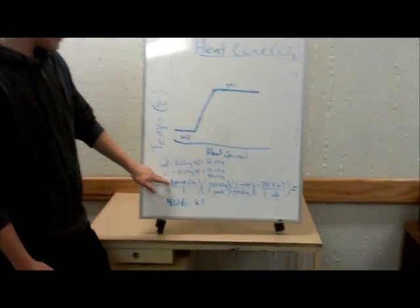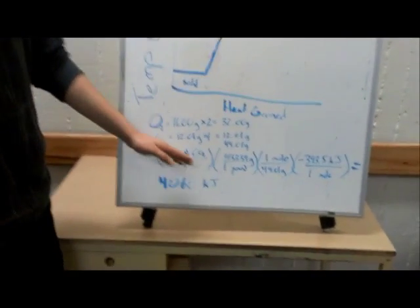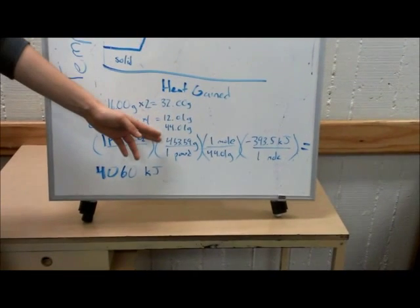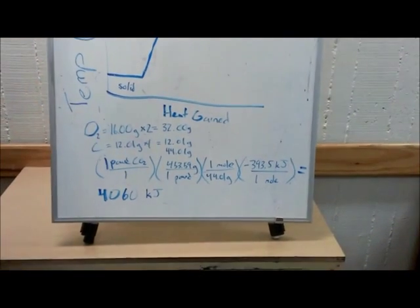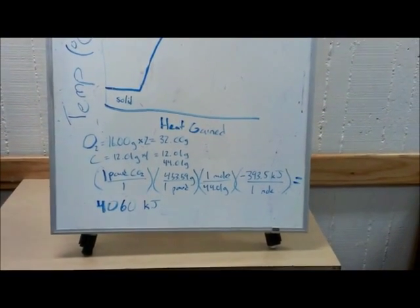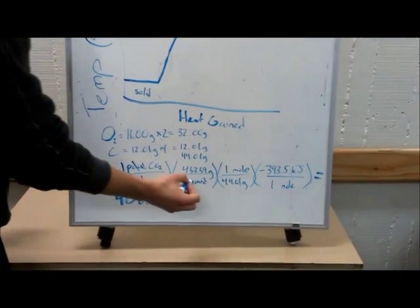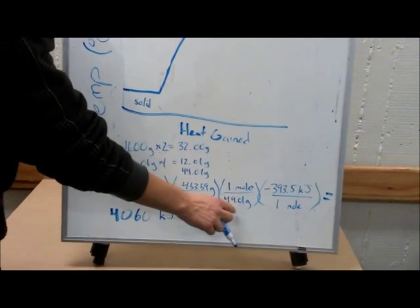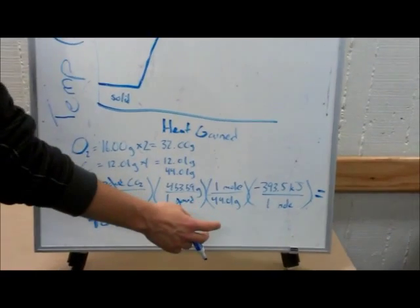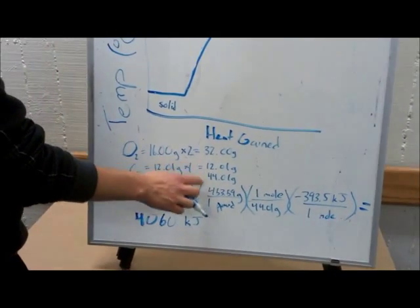So we start with the carbon dioxide, which is roughly a pound, convert that to grams. So pounds cancel. And then we take the grams, convert that to moles through the molar mass. Grams cancel.